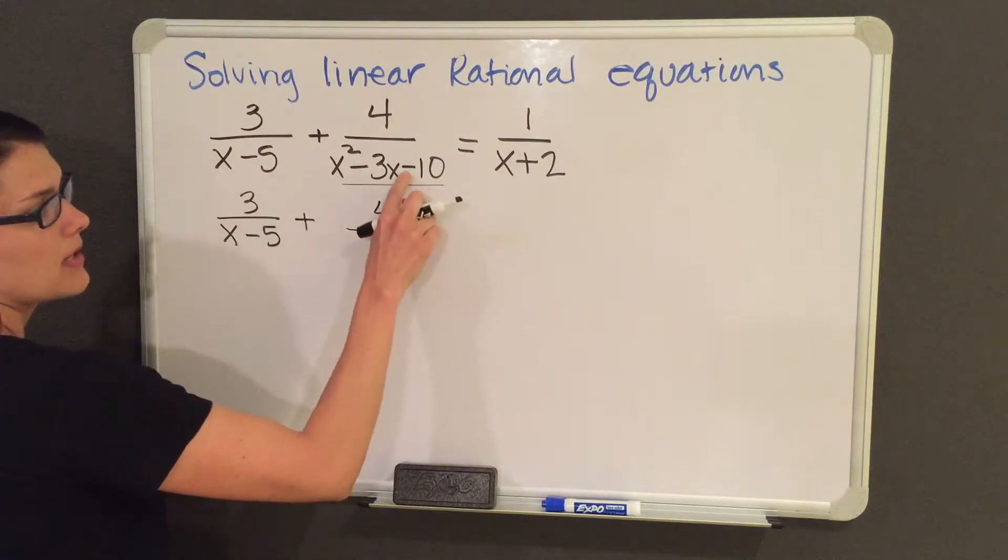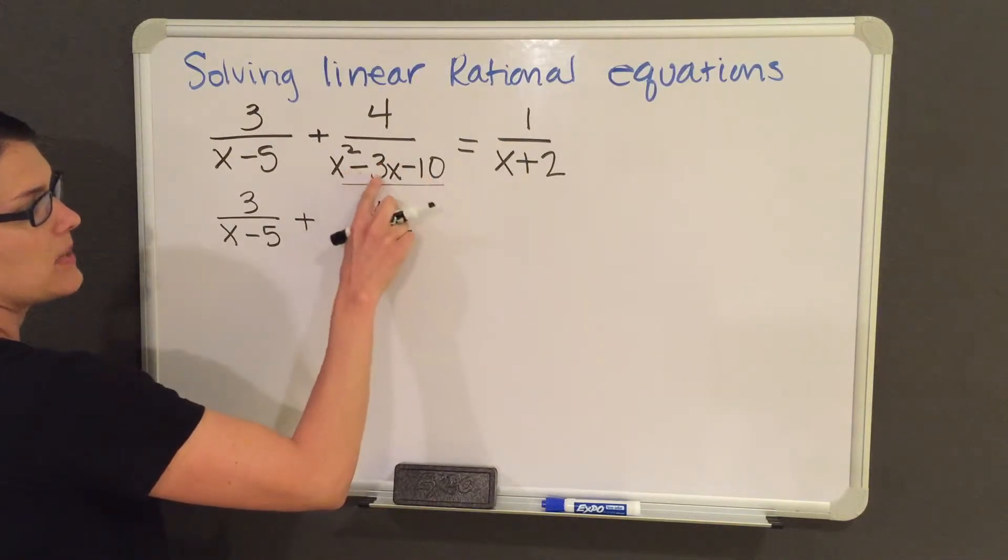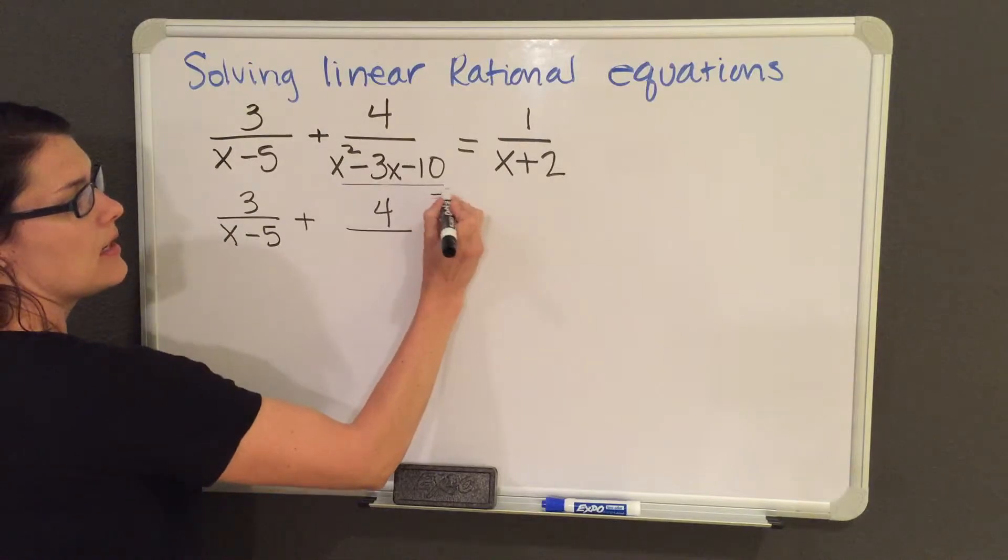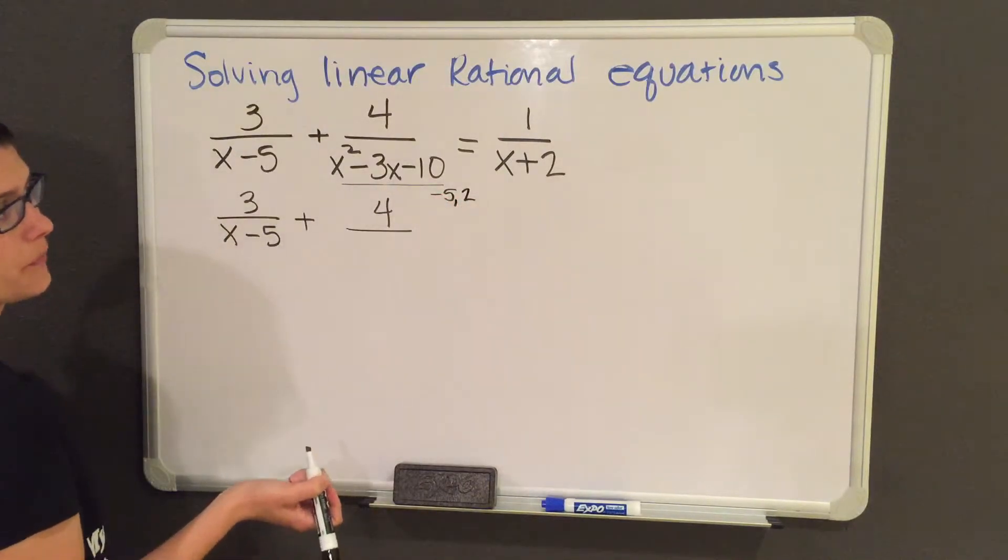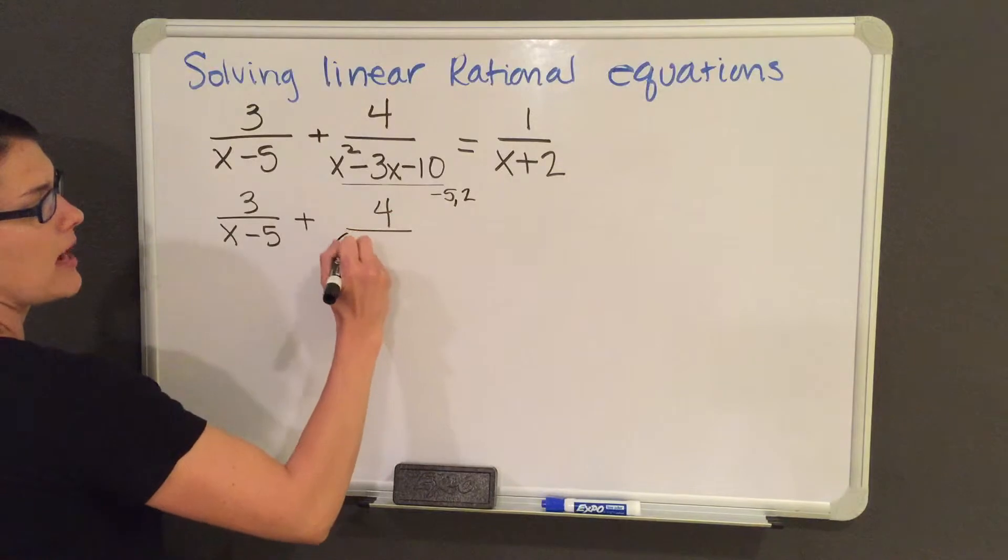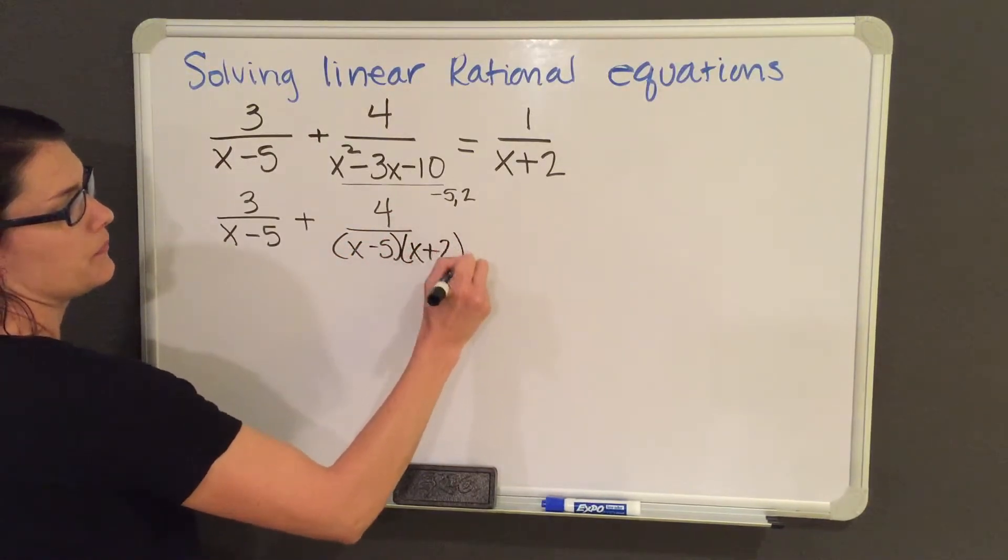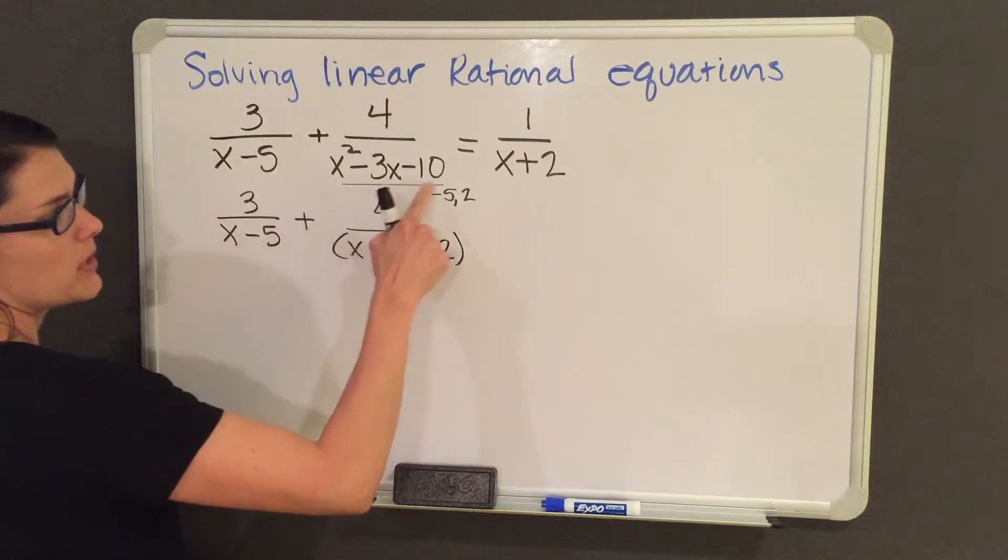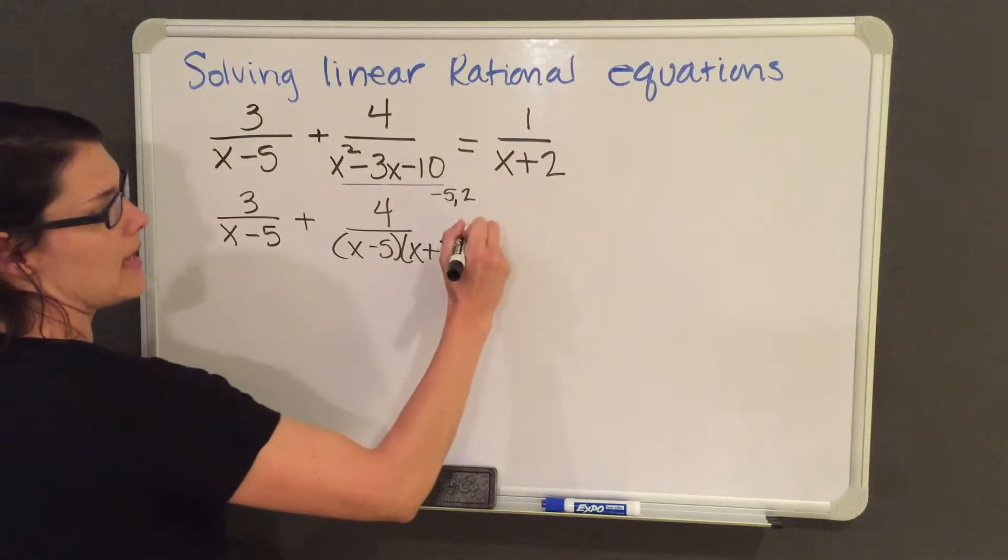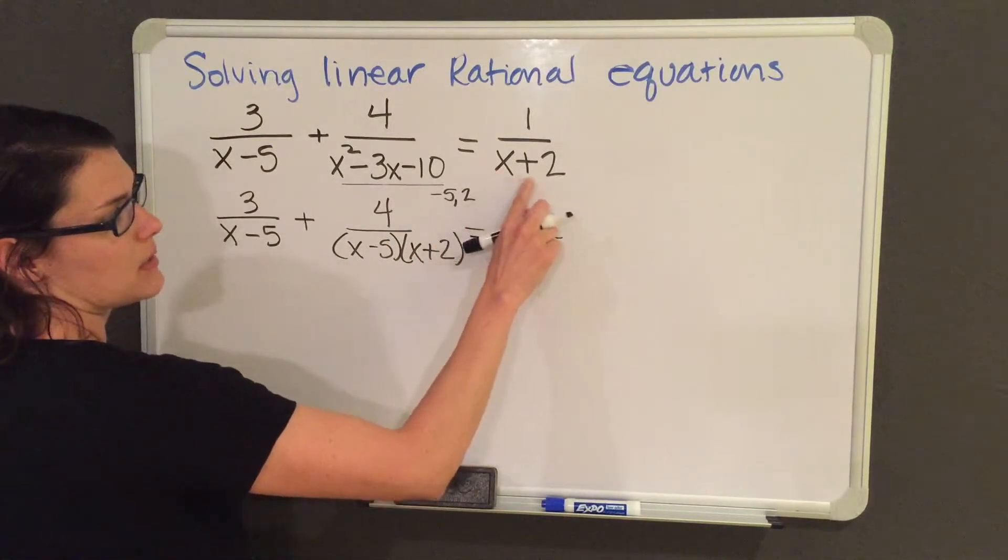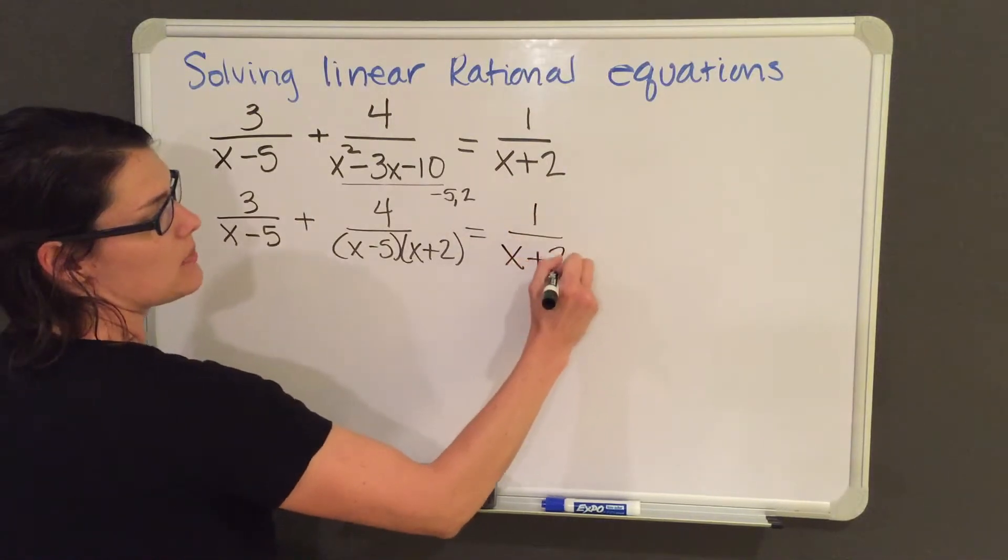So two numbers that multiply to give me negative 10 but add to be negative 3 is negative 5 and positive 2. So its factors are x minus 5 and x plus 2. This one is factored now, so I'm going to move to my last denominator of x plus 2, which does not need to be factored.